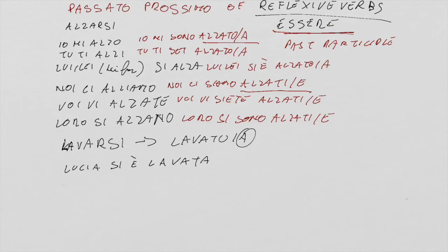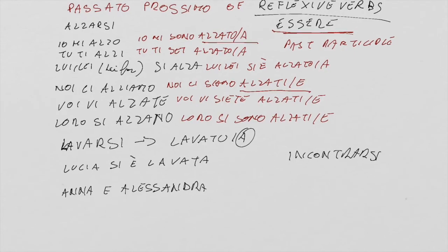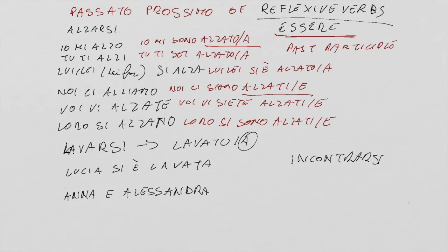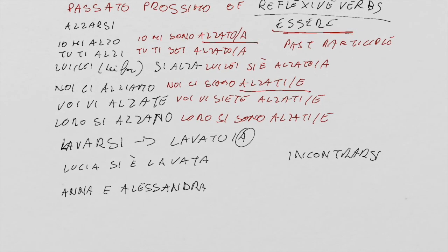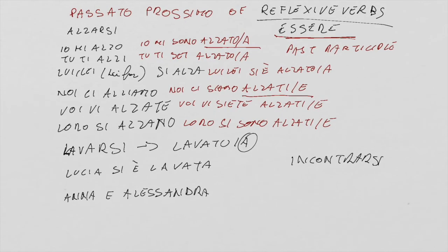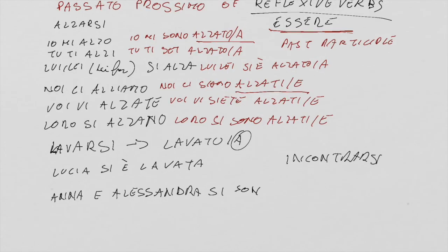Another example: Anna and Alessandra met yesterday. They met each other, so in Italian we must use the reflexive verb incontrarsi. Anna and Alessandra together are a plural subject, they, and there are two girls, so it's plural and feminine. Then I use the pronoun si that works for they, and then the verb sono.